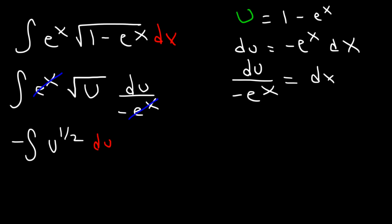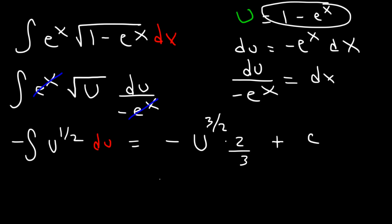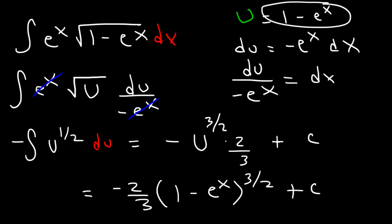Now integrate by adding 1 to the exponent: 1/2 plus 1 is 3/2. Instead of dividing by 3/2, multiply by 2/3, then add the constant c. Replace u with 1 minus e to the x, so the final answer is negative 2/3 times (1 minus e to the x) raised to the 3/2 plus c.